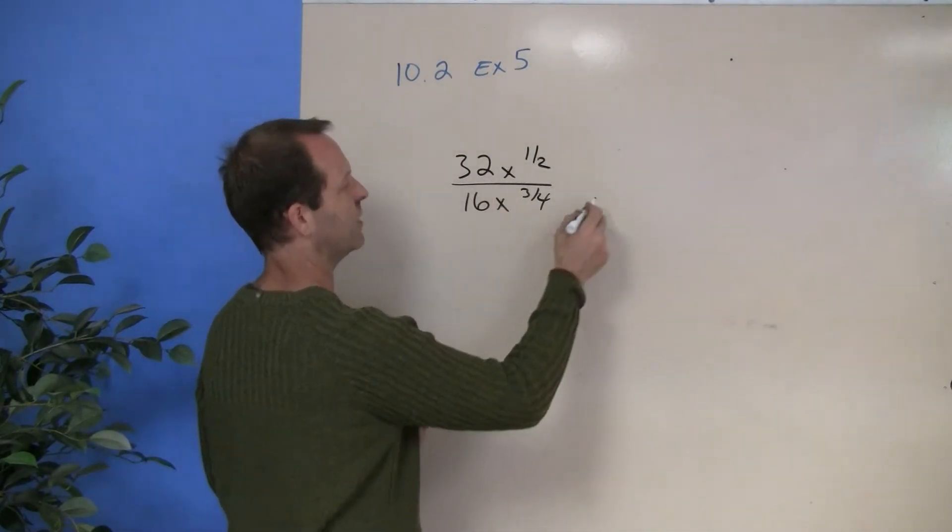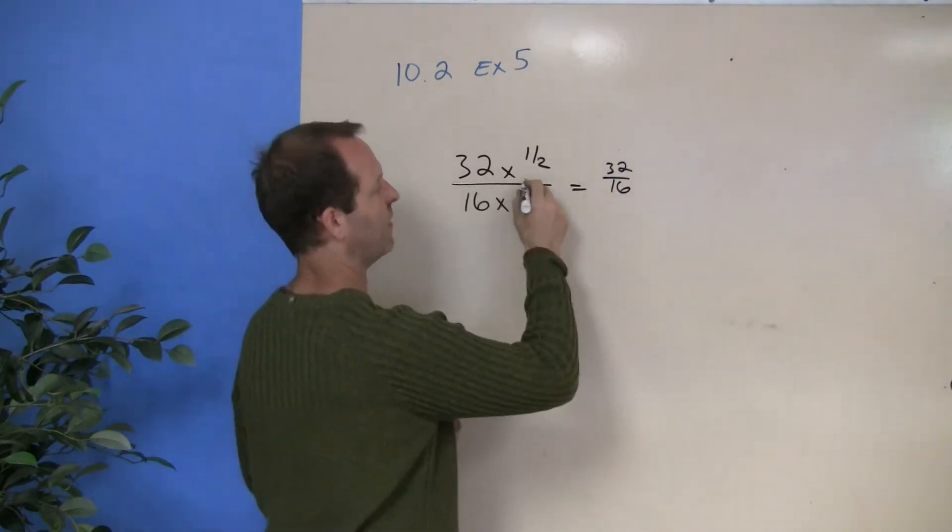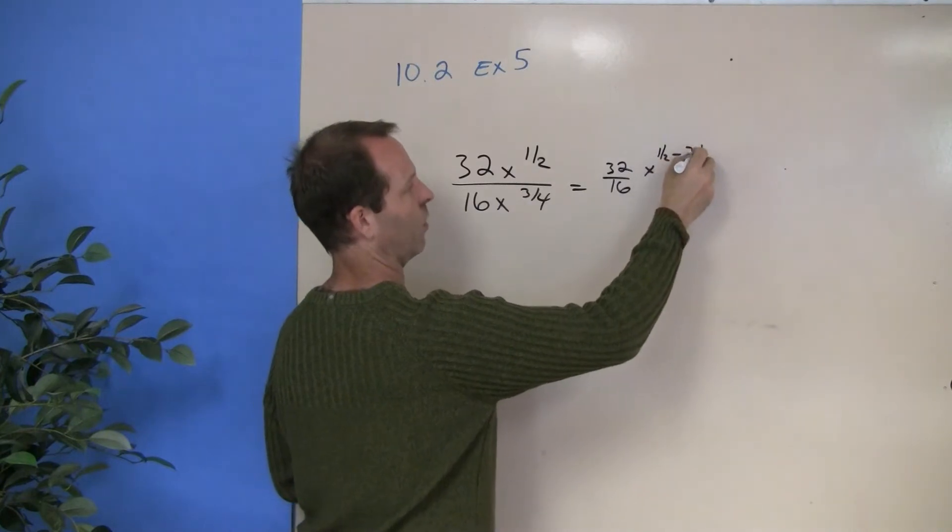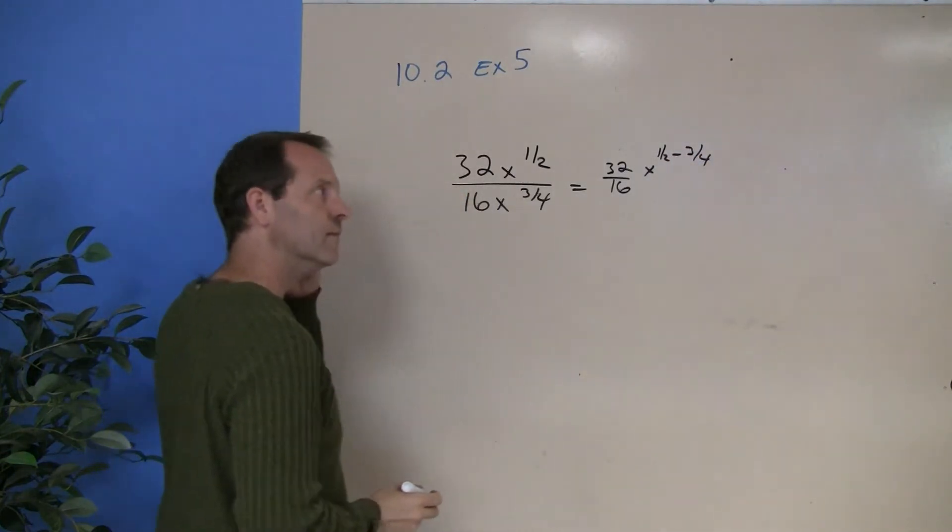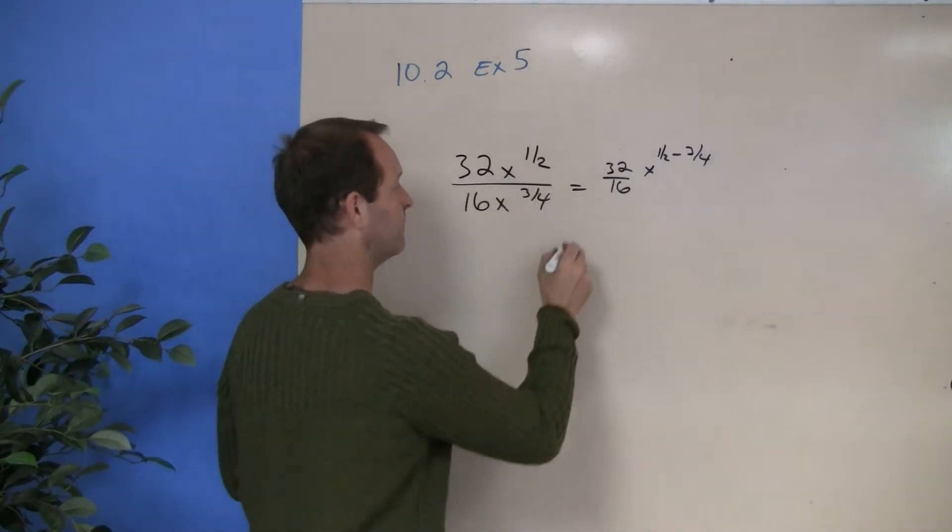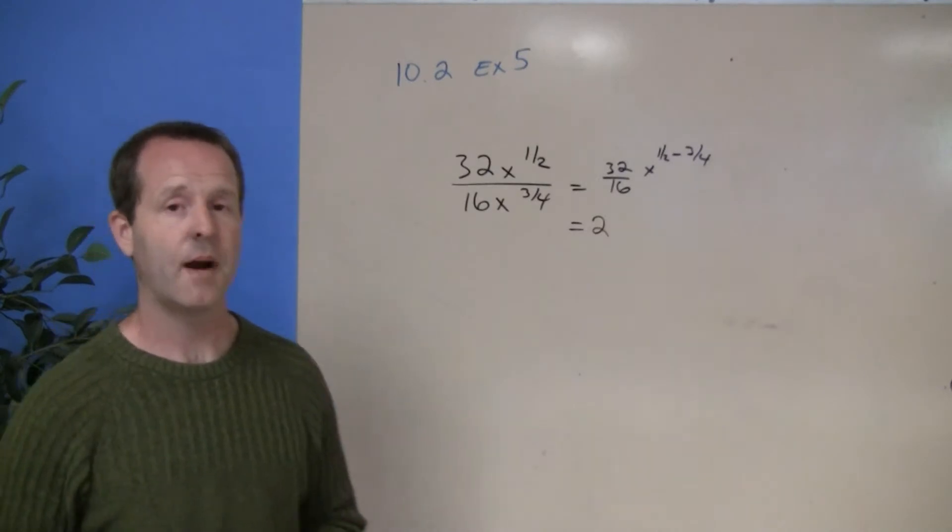So 32 over 16, I'm going to kind of leave that there and then think about the x's. So I have x to the 11/2 minus 3/4ths. 32 divided by 16, I'll do that part.